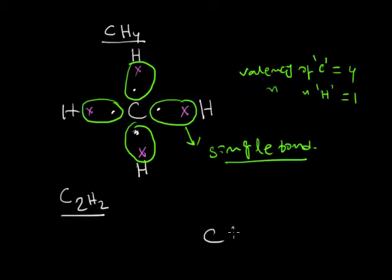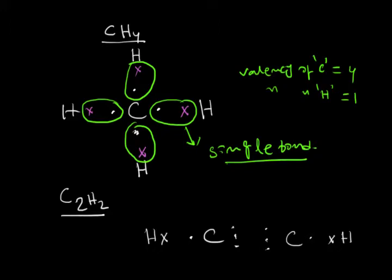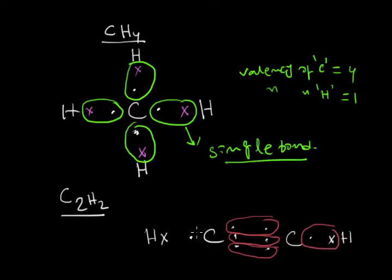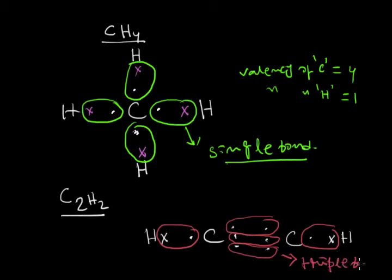Another example is ethyne, C₂H₂. Here the central atom is carbon, which contains four electrons in its outermost shell. Each carbon atom combines with one hydrogen atom, and an electron pair is formed between carbon and hydrogen. Three covalent bonds are formed between the two carbon atoms, so it is called a triple bond. This makes ethyne a triple-bonded molecule.